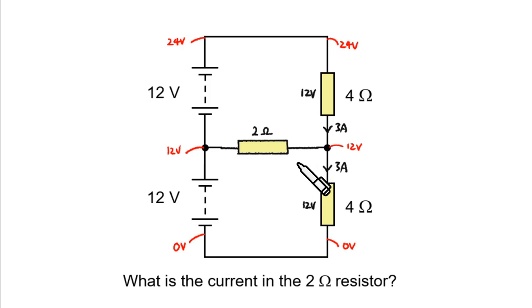So, if I put back the 2 ohm resistor, do you think any current is going to flow through it? The current through this 2 ohm resistor is indeed 0.